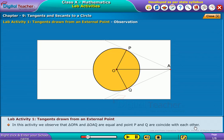In this activity, we observe the triangle OPA and triangle OAQ are equal and point P and Q coincide with each other.